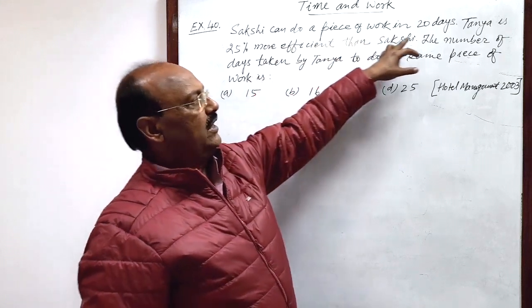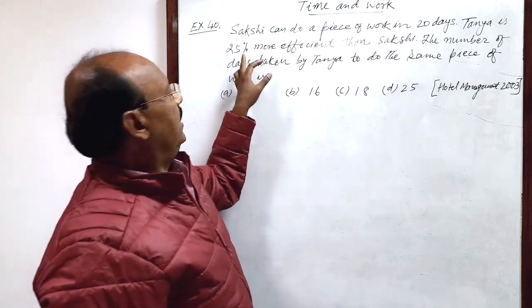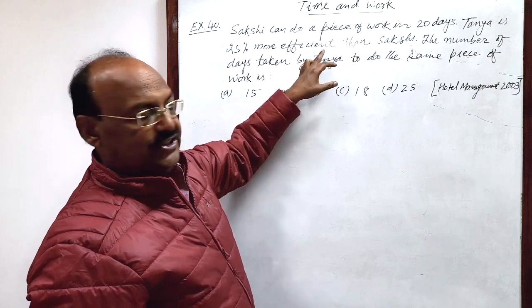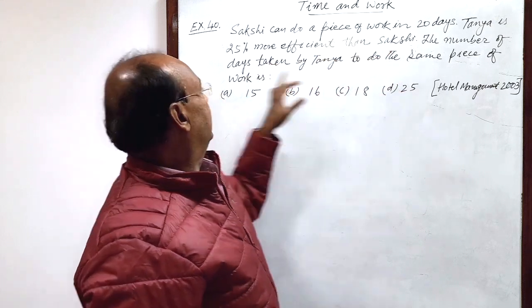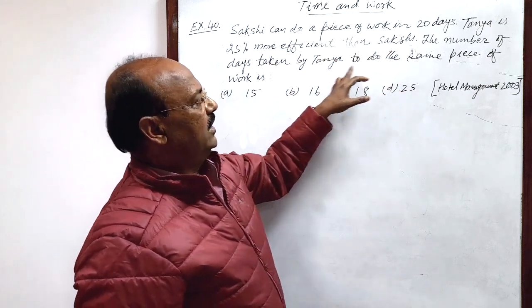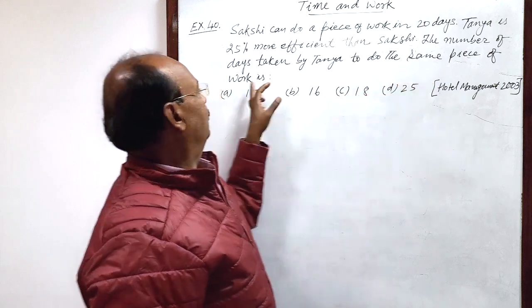Question is, Sakshi can do a piece of work in 20 days. Tanya is 25% more efficient than Sakshi. The number of days taken by Tanya to do the same piece of work is,